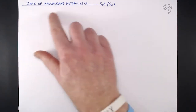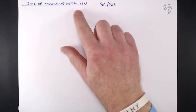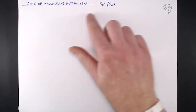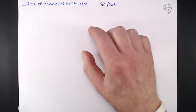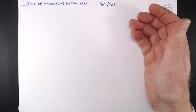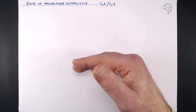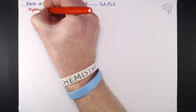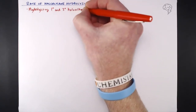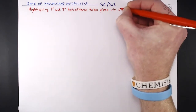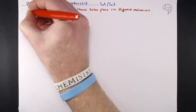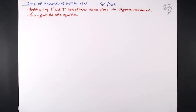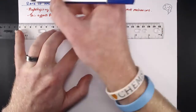As part of this rates topic we need to discuss the rate of halo alkane hydrolysis — turning halo alkanes into alcohols. There is a difference in the way this reaction can happen, and they're often termed the SN1 and SN2 mechanisms. We're going to look at those two different types of mechanisms, what they mean, and the consequences for the rate equation. Because primary and tertiary halo alkanes take place via different mechanisms, this actually affects the rate equation itself.